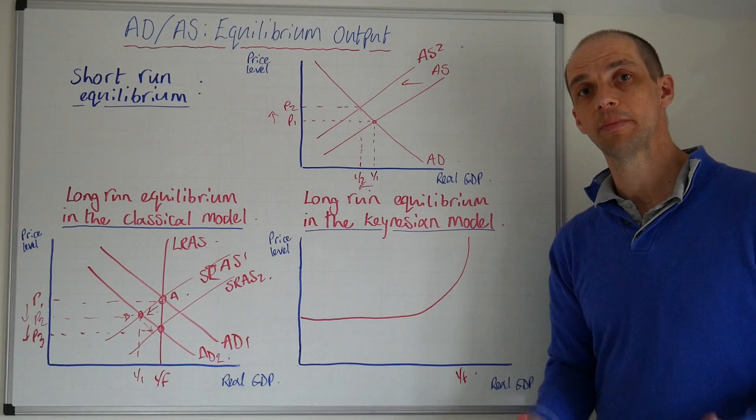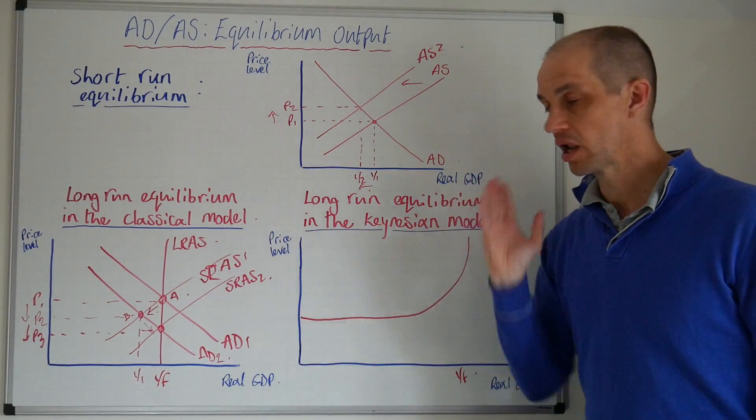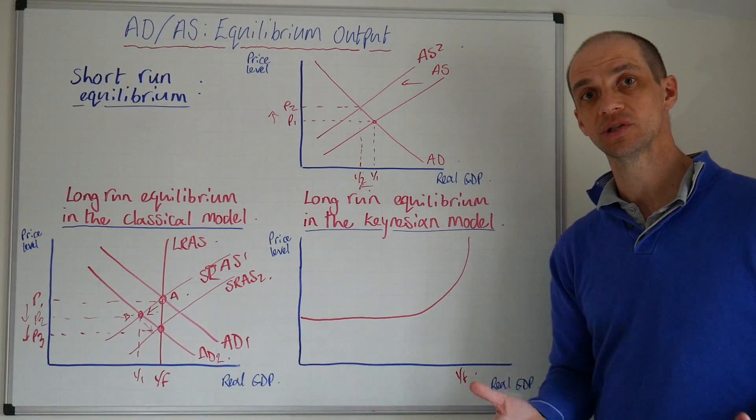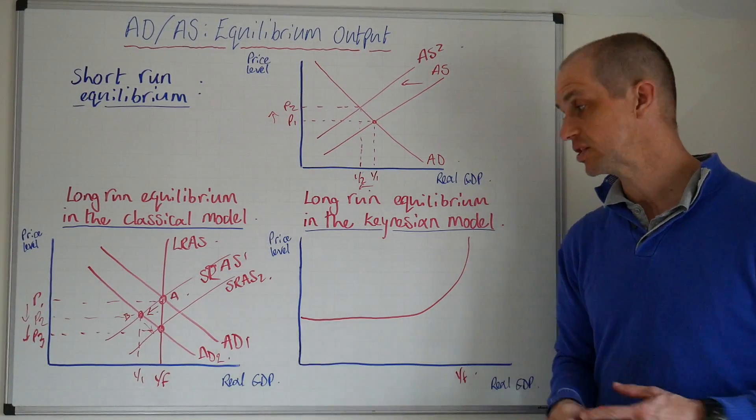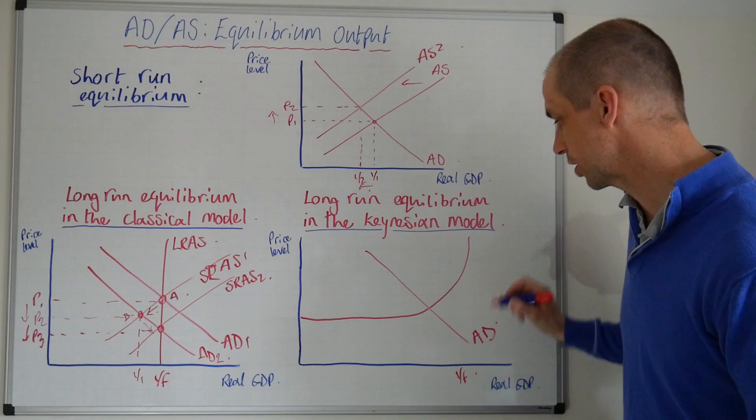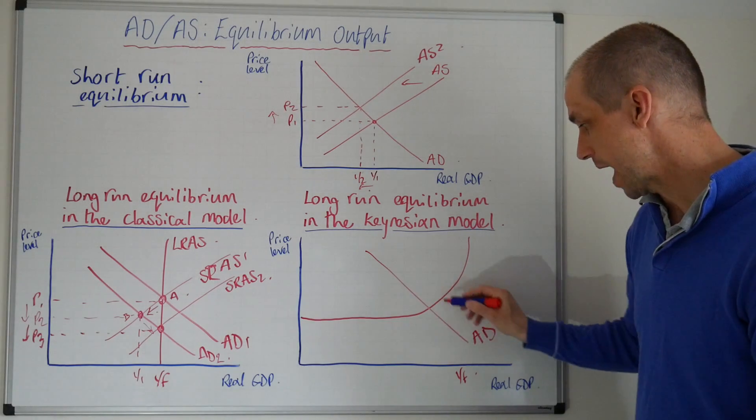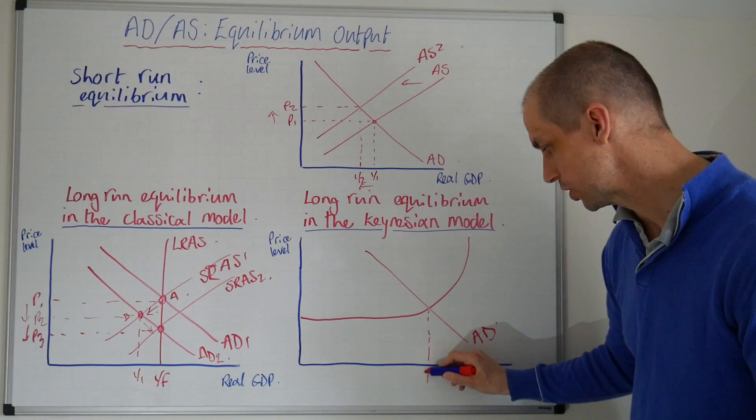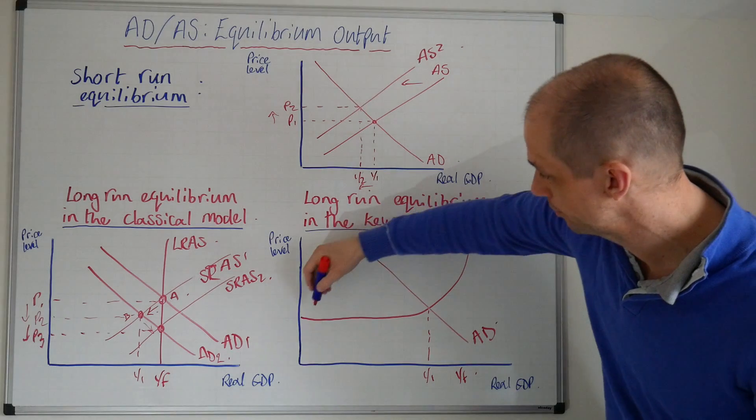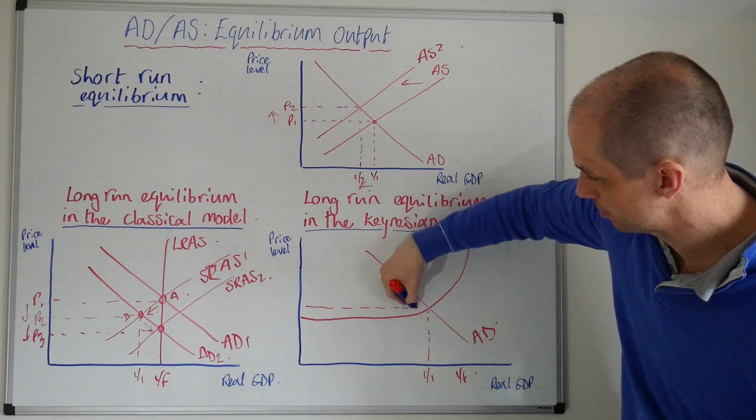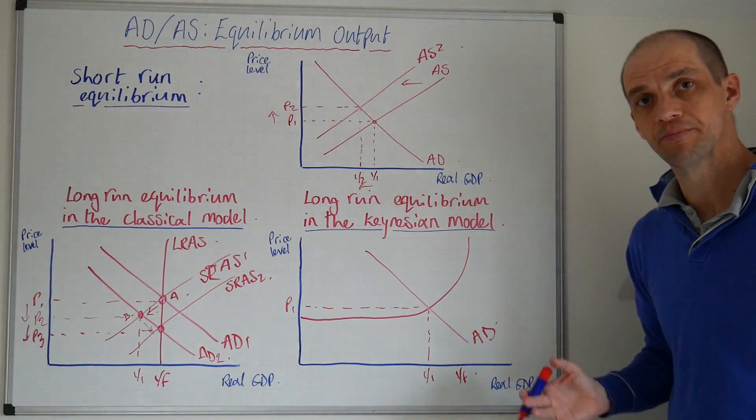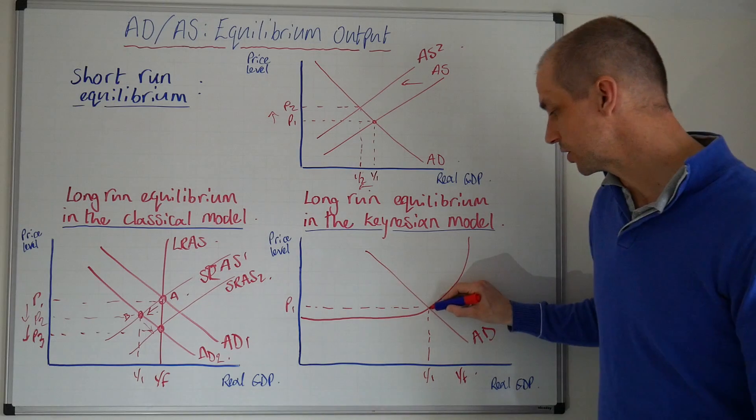So we draw that out and remember we reach this point where the curve becomes perfectly inelastic and at that point that is where we achieve YF or full employment. So Keynesian economists remember they do not consider that the labour market always reaches that clearing point where anyone who wants to get a job can actually get a job. So thus we can see in this scenario aggregate demand may well be at this point and this would correspond to an output level or real GDP level of Y1 and this would then correspond with a price level of P1.